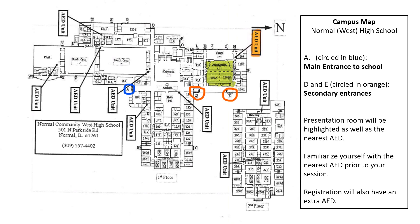I'm beginning here with a campus map of Normal West High School, and you'll notice on this map that the letter A, the letter D, and the letter E are all circled. Letter A represents the main entrance to Normal West High School and that's circled in blue, and then letters D and E are circled in orange and they represent a secondary entrance. Between the three of those, those are going to be the main entrances that people will use when coming to the conference. In the event there's an emergency situation, if you or your secondary responder is asked to contact 911, you'd want to direct the responders to enter likely through one of these doors, and most likely door A.